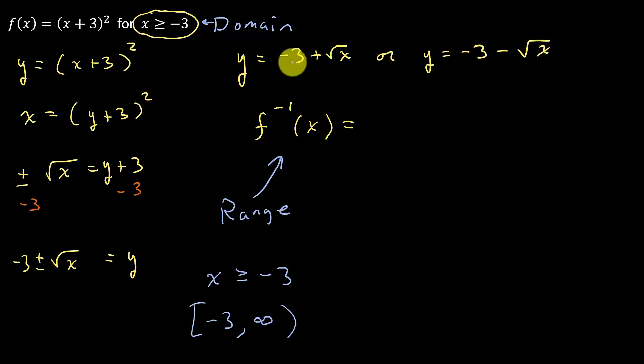So that means we're taking negative 3 and we're adding a positive number to it. So that means these values here are just going to be larger than negative 3 that we get out. But this one, we're subtracting a positive number. So if I do negative 3 minus a positive number, that's going to give me values to the left of negative 3 that are less than negative 3.